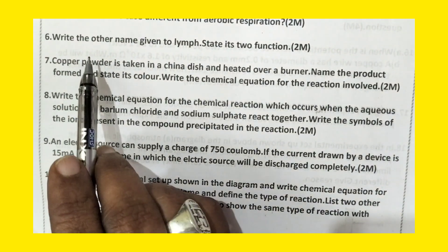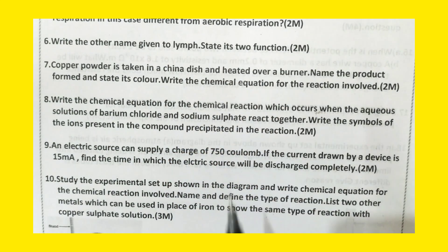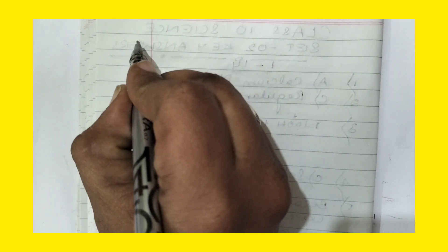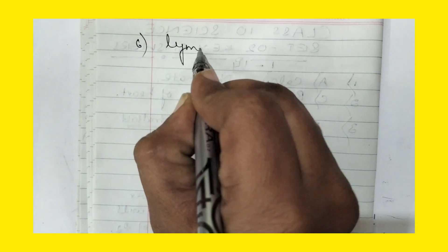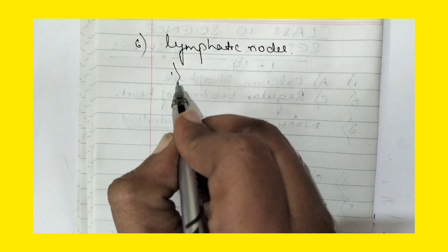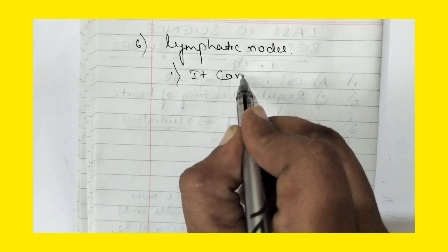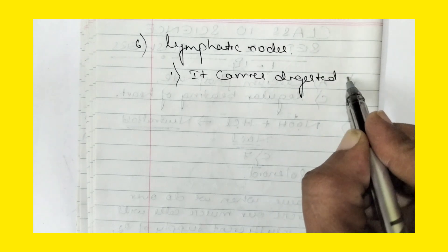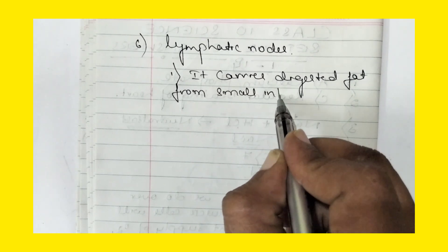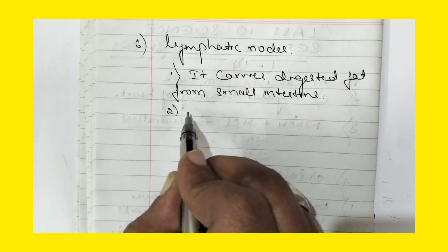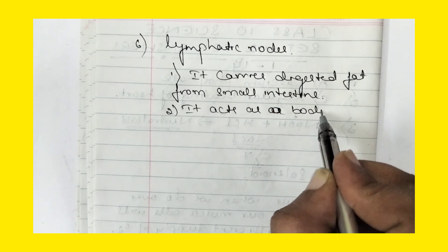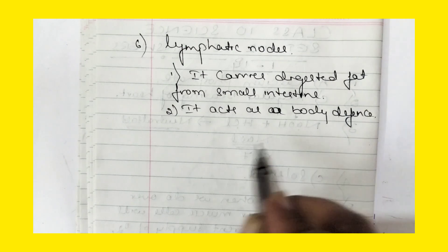Now question number 6: write the other name given to lymph and state its two functions. The other name given to lymph is lymphatic nodes. The two functions of lymph are: it carries digested fat from the small intestine, and it acts as a body defense since it contains WBC.